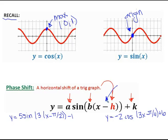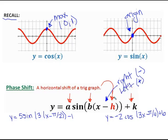Remember, if something's on the inside, it does the opposite of what we would think. So if it says minus h, we're actually moving it to the right. If it moves to the left, we're going to see a plus — like x plus h. You might remember this from when we did those transformations: it does the opposite of what you think.